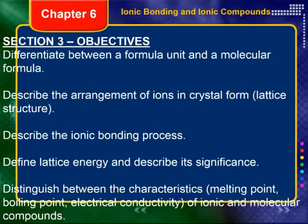Then describe the arrangement of ions in crystal form — this goes along with a special word called a lattice structure. Then I want you to be able to describe the ionic bonding process, define lattice energy and describe its significance, and then distinguish between the characteristics like melting point, boiling point, and electrical conductivity of ionic and molecular compounds.